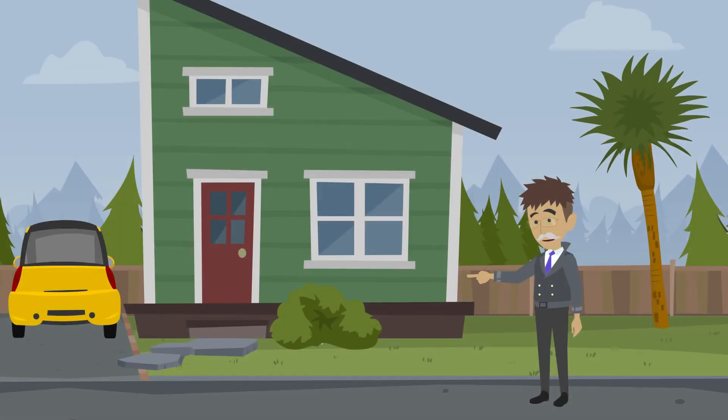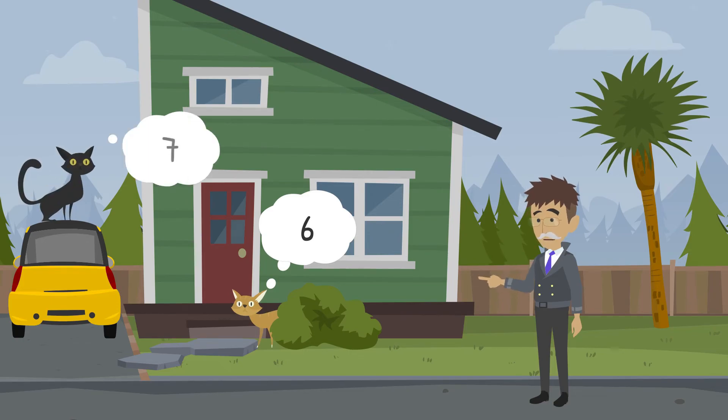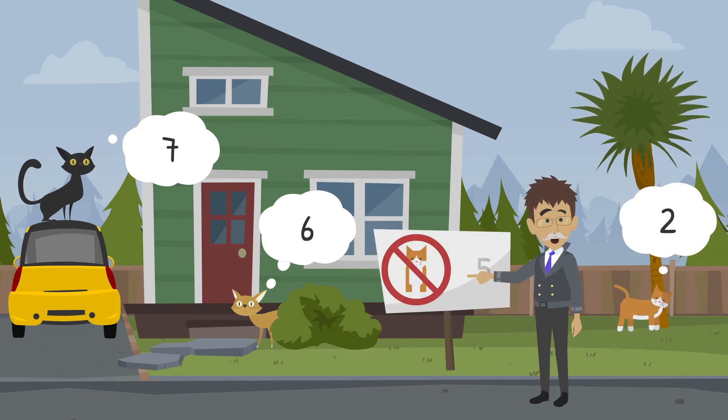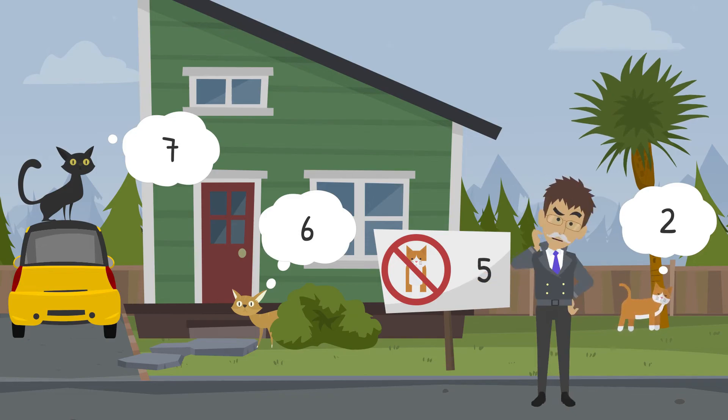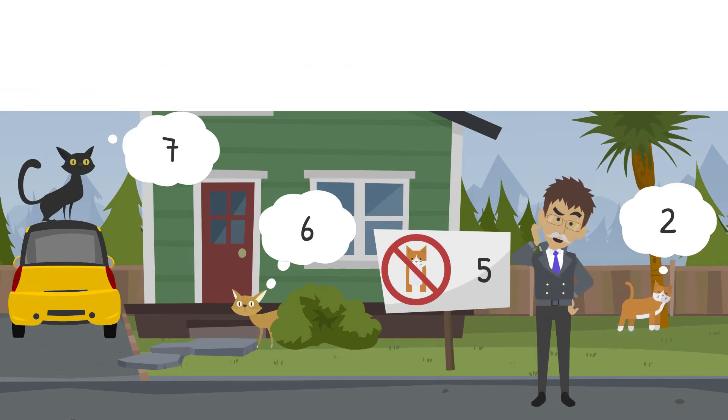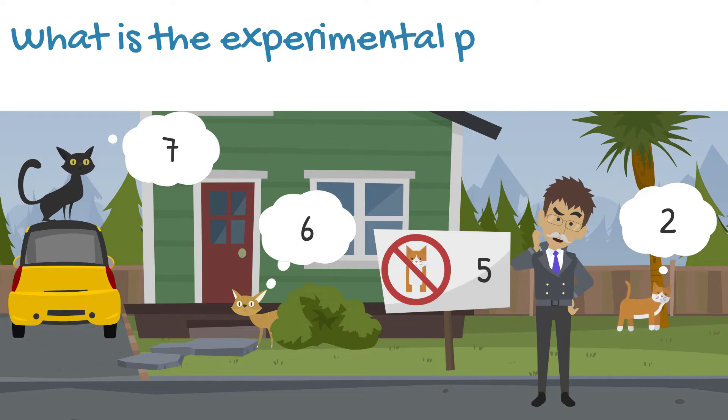After observing the cats in the yard, I noticed the following. Six times an orange cat hid in a bush near the front door. Seven times I saw a large black cat in the driveway. Two times an orange cat played under a tree. Finally, five times no cat appeared in the yard. Based on this information, what is the experimental probability of a cat being in the yard?